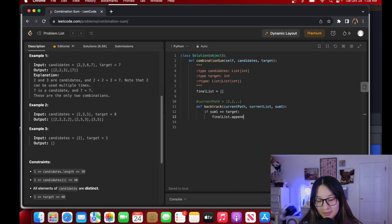We want to say if sum1 is equal to target, then we want to add to our final list, append current path, and then we can return. Then we can say else if sum1 is greater than target, we don't want to continue down that path so we can just return. And then we have else, which is when it is less than target.